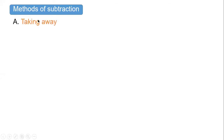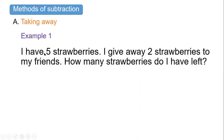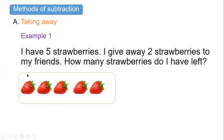Now let's look at methods of subtraction. We begin with taking away — we can subtract by taking away. I have five strawberries; I give away two strawberries to my friends. How many strawberries do I have left? Let's count together: one, two, three, four, and five.